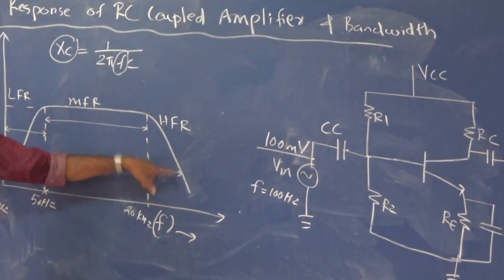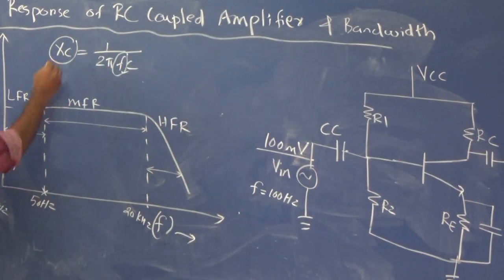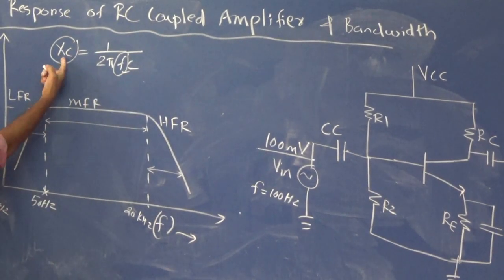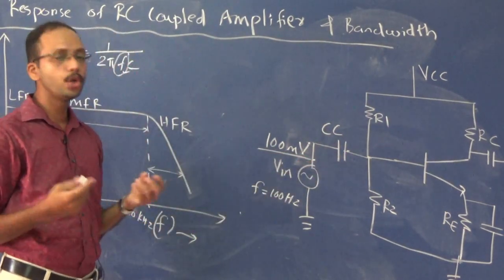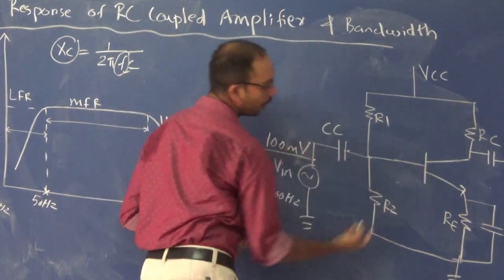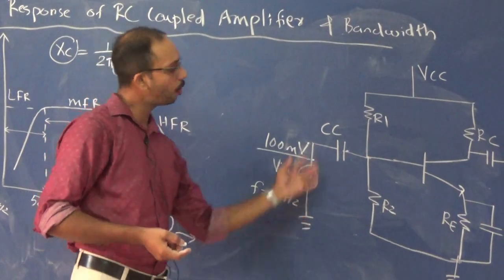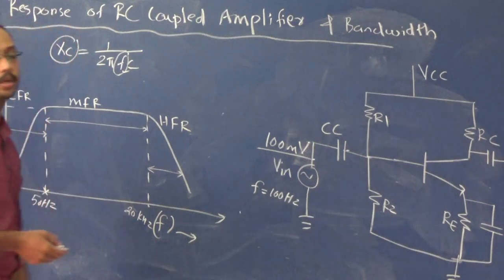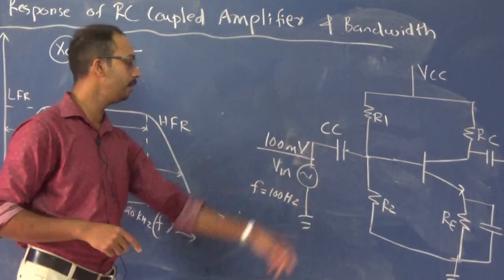In the high frequency case, when frequency is high the reactance decreases. At that time the coupling capacitor offers low reactance, so more signal comes to the base for amplification. However, this excess signal causes high loading in the amplifier section — this is called the loading effect — and due to this loading effect the gain decreases.